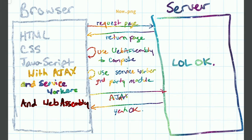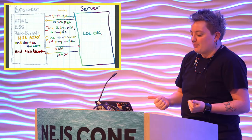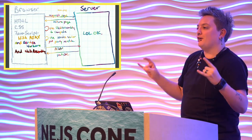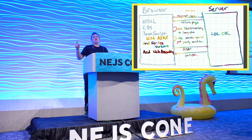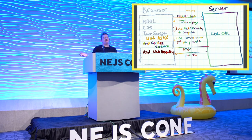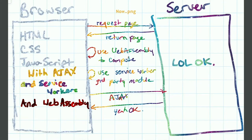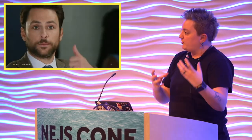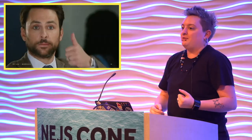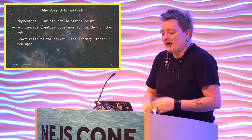This is now.png — stuff we can use now. With the browser we've got HTML, CSS, JavaScript with AJAX, and service workers, and WebAssembly. Now you request a page and your server — your server is probably just a bunch of serverless functions running on someone else's server. You use WebAssembly to compute something and stay in the browser. Then you use a service worker third-party module, and your server sends back the data you need.